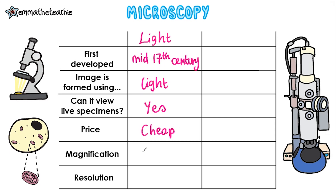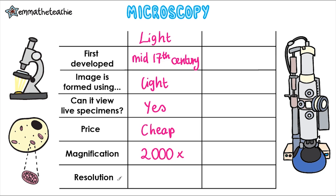The best ones can magnify up to 2000 times, which means that it zooms in 2000 times. Resolution is all about the details you can see — it is the ability to see two things as separate objects. A high resolution means you can see lots of detail and everything is clear and separated. The light microscope has quite a low resolution, with a resolving power of around 200 nm.